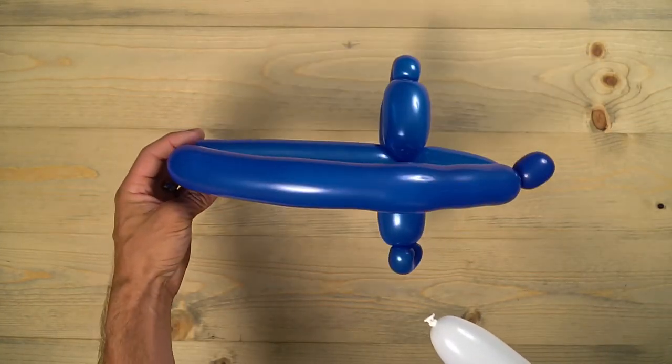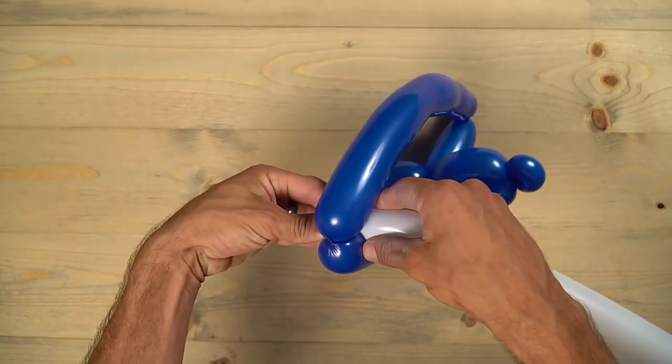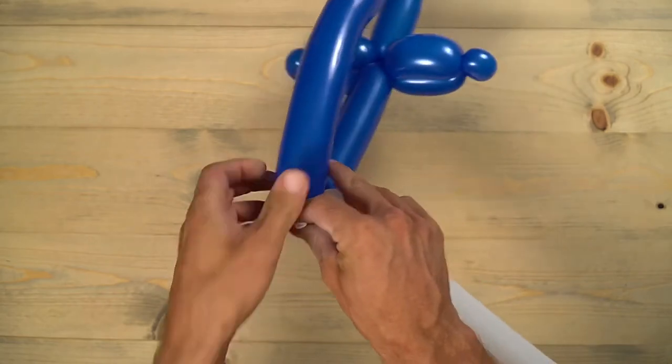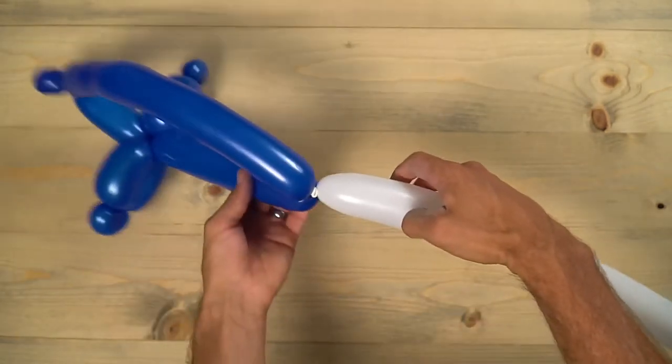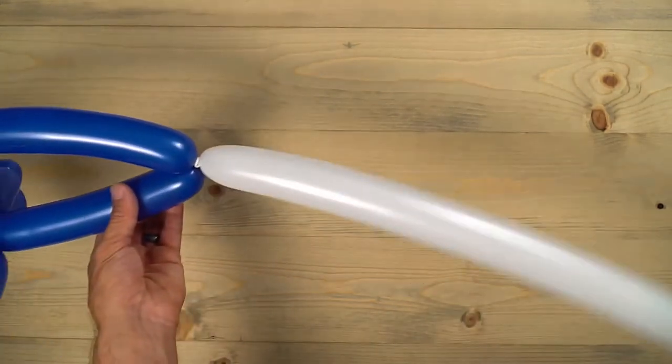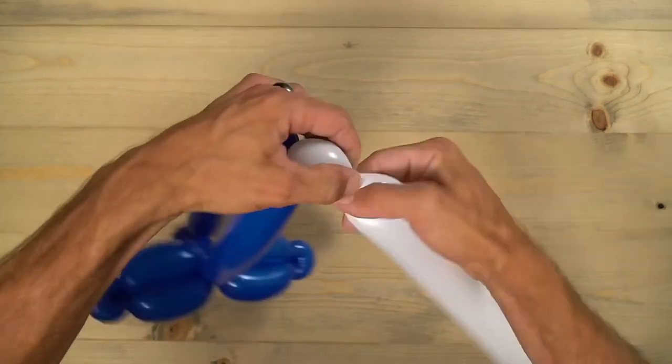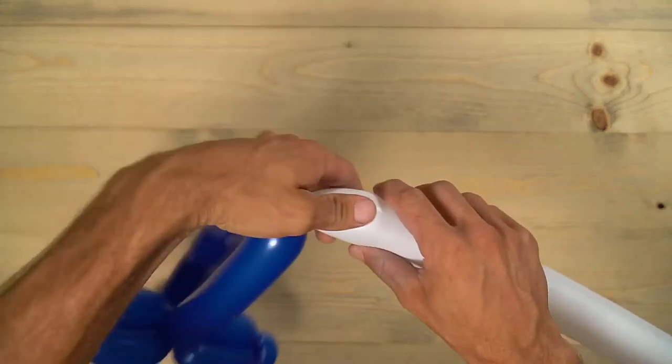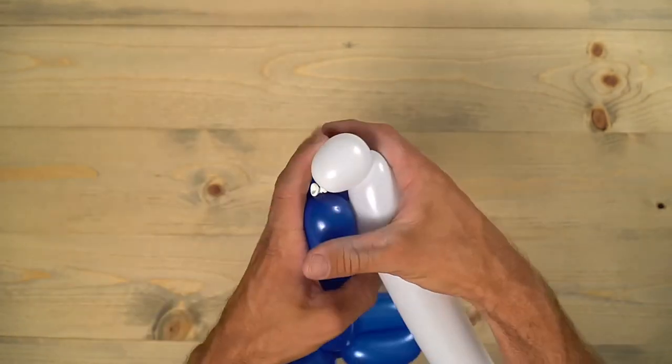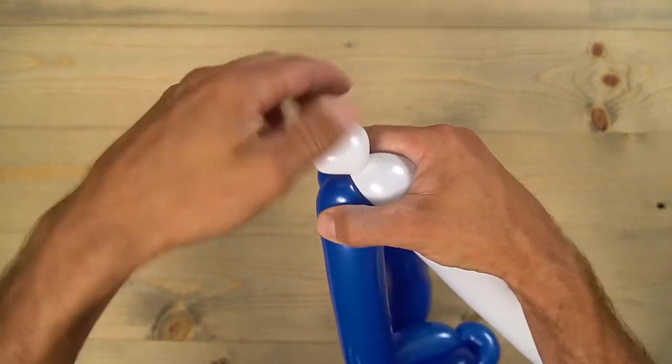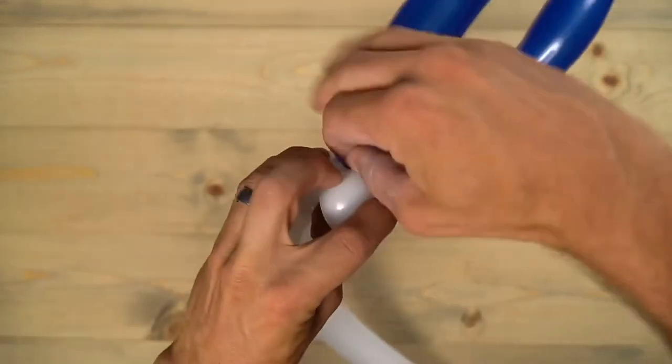We'll grab that next balloon we have. So we're just going to wrap it in right there on the top of the shield. And go ahead and make a one inch bubble there. And you're going to pinch twist that. That'll help lock in that nozzle we just put in as well. Bring that around a couple more times. Make sure it's secure.